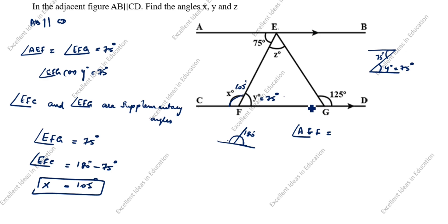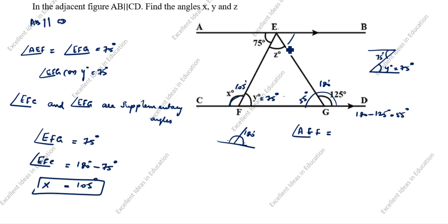Now we will find the next angle. This whole straight line is 180 degrees. So 180 minus 125 is 55 degrees — this angle is 55 degrees. Now, this is also an alternate interior angle, so this angle is also 55 degrees.